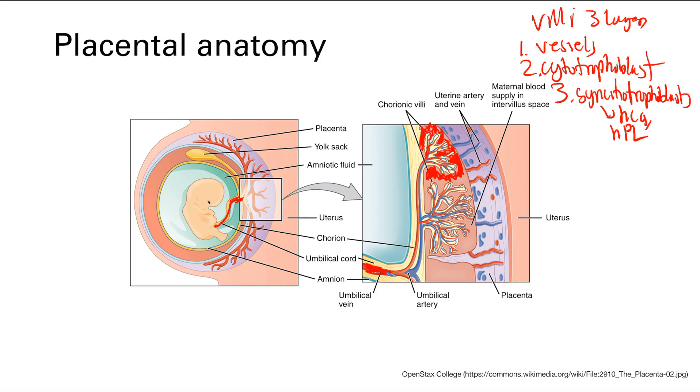And note that the placenta is implanted in this area called the decidua. It's part of the uterine endometrium. And note that the villi themselves do not attach to the myometrium. They do not attach there. They attach to the decidua. This will be a little bit relevant a little bit later. We'll see why. So that's it for the placental anatomy.